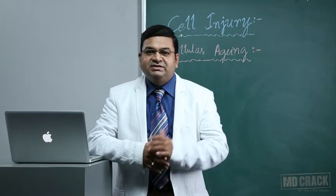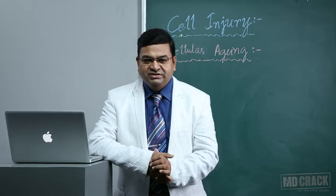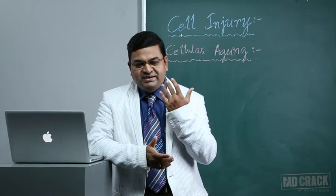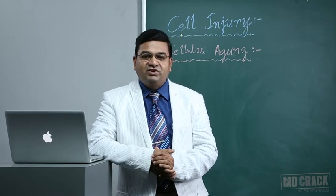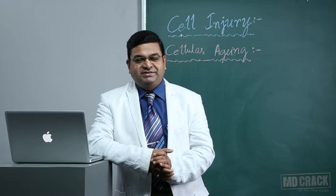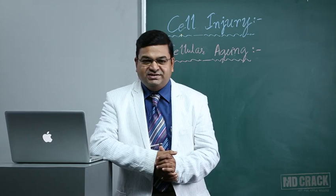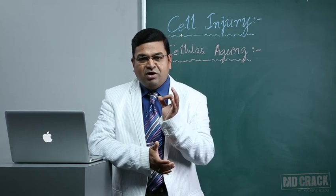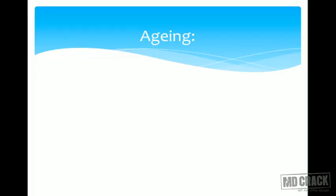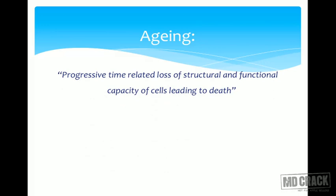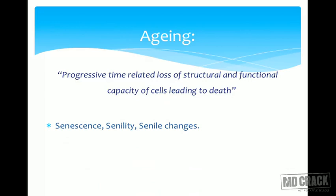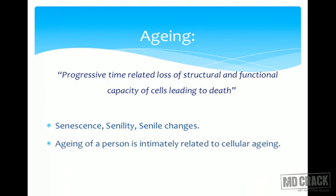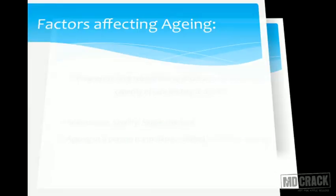Welcome to the topic of cellular aging, the last subtopic in the cell injury chapter. As age advances, aging itself is a risk factor for development of a variety of disorders, including cancers. We will see what changes occur in cells — the morphological and structural changes with the aging process. Aging is an unavoidable, progressive, time-related loss of structural and functional capacity of cells, leading to cell death. We use terminologies like senescence, senility, and senile changes. Aging of a person is intimately related to cellular aging, with changes occurring at molecular, cellular, and subcellular levels.